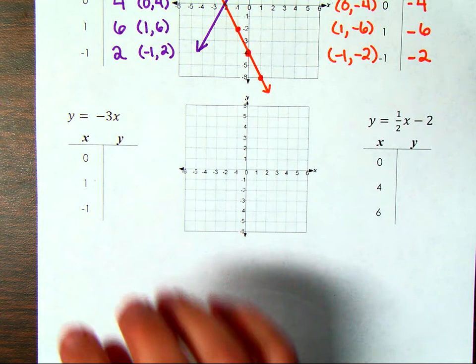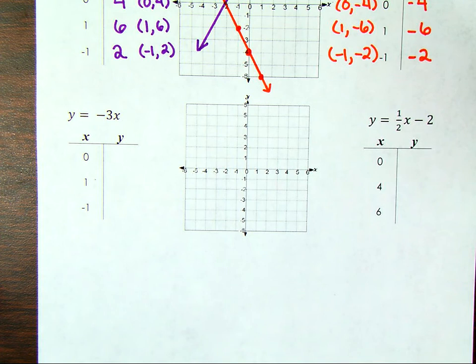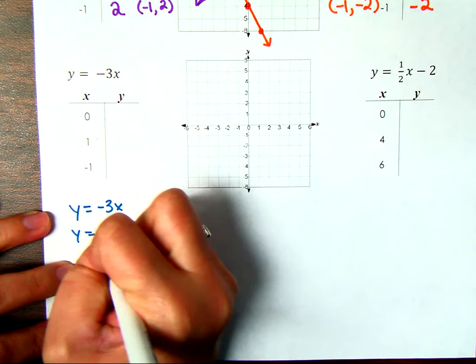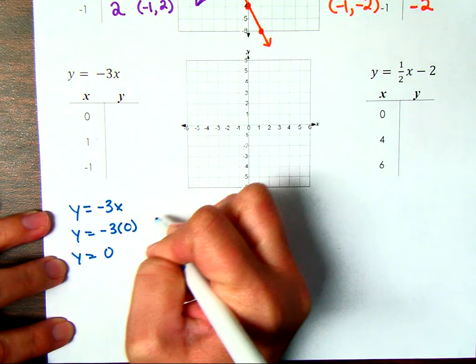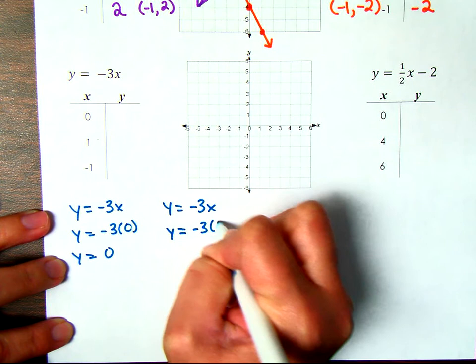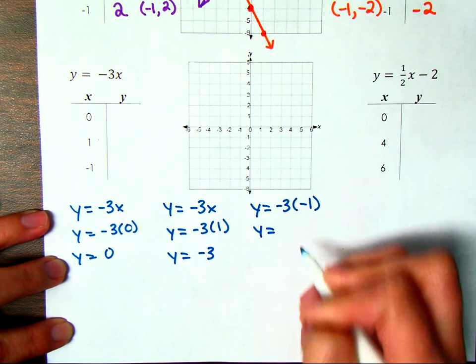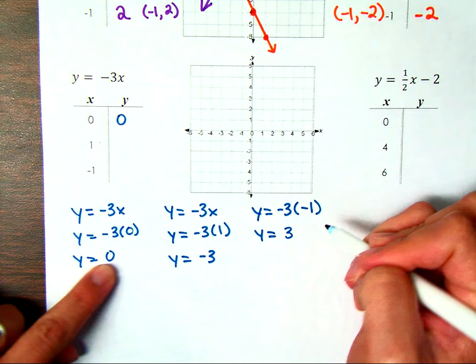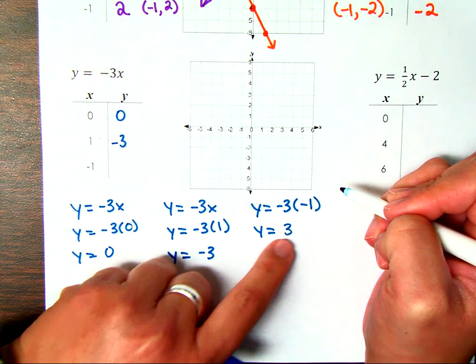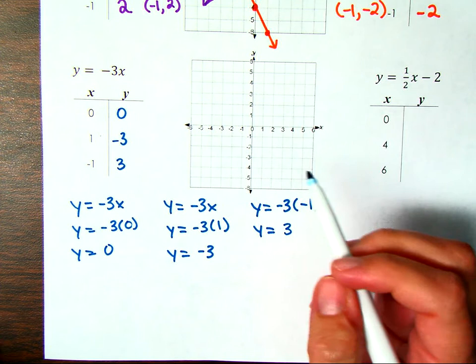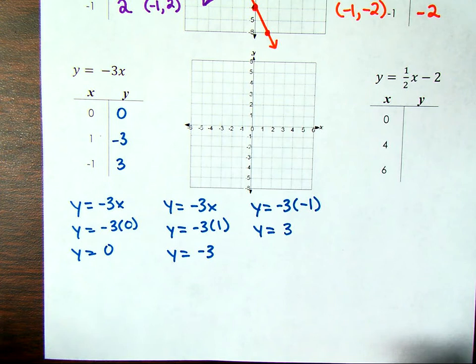Now I have the equation y equals negative 3x. This is just multiplying — a multiplicative relationship. When x is 0: negative 3 times 0 is 0. When x is 1: negative 3 times 1 is negative 3. When x is negative 1: negative 3 times negative 1 is positive 3. So our ordered pairs are: (0, 0), (1, -3), (-1, 3). It's really important that you show your work, because if you accidentally put a negative sign when it was really positive, it throws the whole graph off.